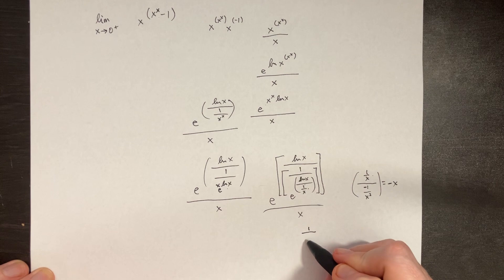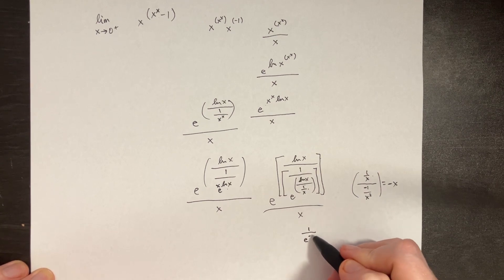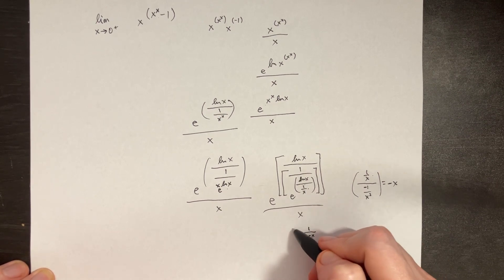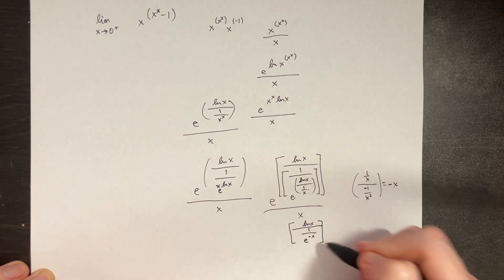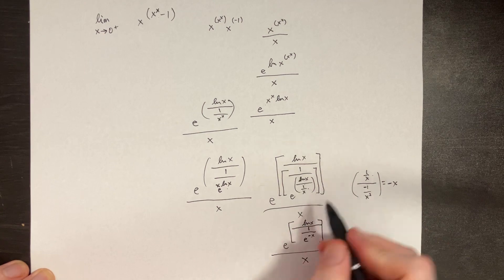We get something like 1 divided by e to the negative x here. Then that's going to be ln of x on top. This whole thing is to the power of e, and on the bottom we have this x.